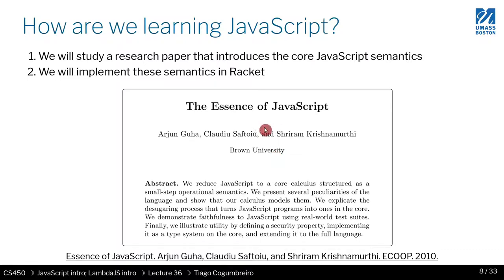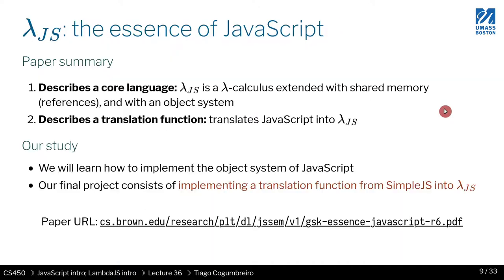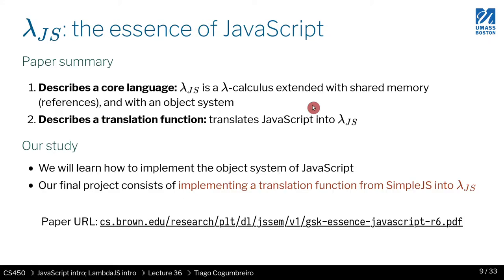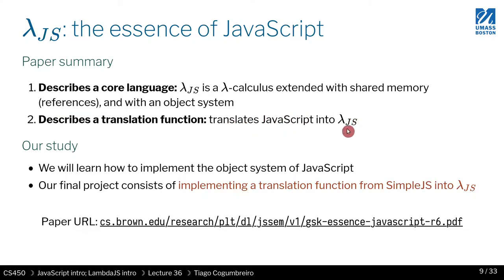So why would you want to have a paper about this? One use is to debug existing browsers and all that. This was published in a conference called ECOOP, which is a really nice conference — the E is for Europe, so it always happens in Europe. The main idea of the paper is that they define an extension of Lambda Calculus called Lambda JS — so it's Lambda Calculus plus shared memory plus an object system. We've learned a similar thing: shared memory used internally. JavaScript is a mutable language, so any code can write to a variable and update it, and we're going to have to implement that as well. The paper also describes a translation function that goes from JavaScript into Lambda JS, and this is basically your homework eight.